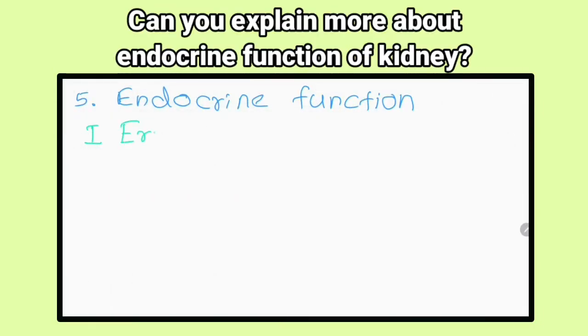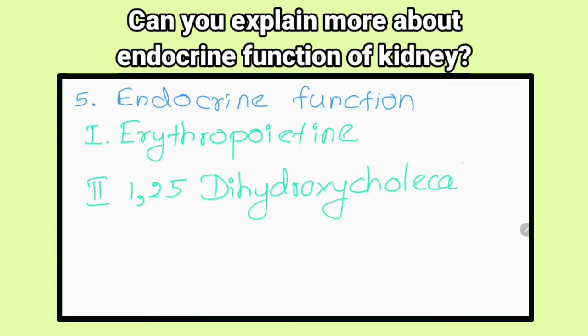Can you explain more about the endocrine function of the kidney? It regulates erythrocyte mass by secreting erythropoietin. It regulates body calcium level and bone metabolism by producing 1,25-dihydroxycholecalciferol or active vitamin D.